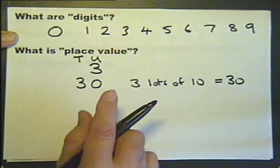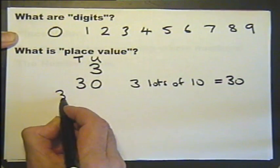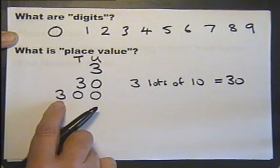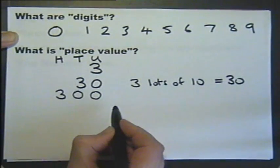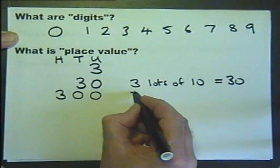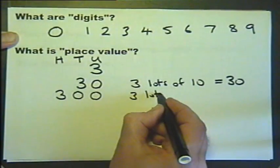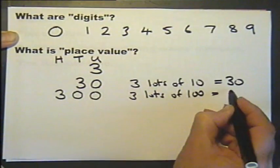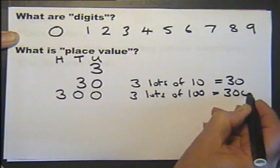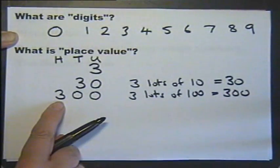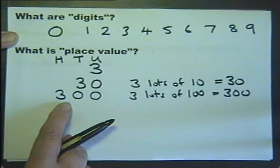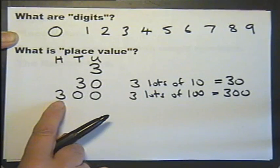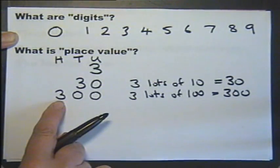Now let's look at this. The 3 now is in the hundreds column. So in other words, we have got 3 lots of 100. The 3 lots of 100 is 300. So the digit 3 in this position gives us the number 300. So the place value of the 3 is 300.